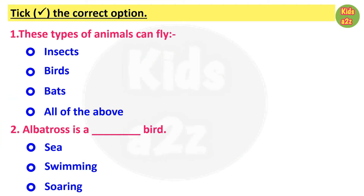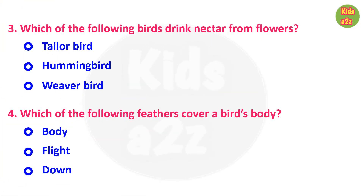Here kids need to choose the correct answer from the given options. Number 1, which type of animals can fly — answer is all of the above, because insects, birds and bats can all fly. Number 2, albatross is a sea bird. Number 3, which of the following birds drinks nectar from flowers — answer is hummingbird. Number 4, which of the following feathers cover a bird's body — answer is body feathers.